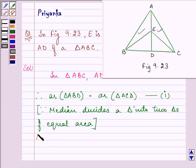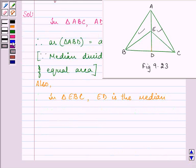Also, E is any point on this median AD. So therefore ED will also be the median of this triangle. For this small triangle, this will also be the median. So we can say that therefore,